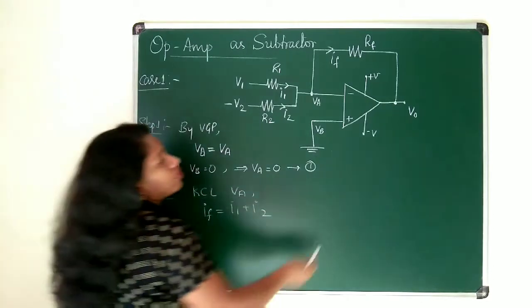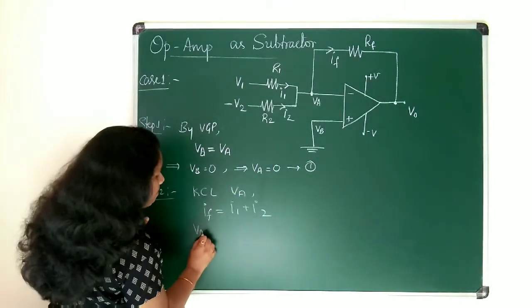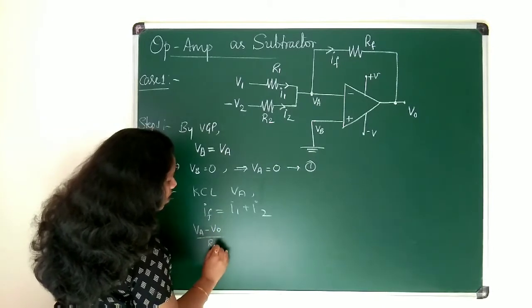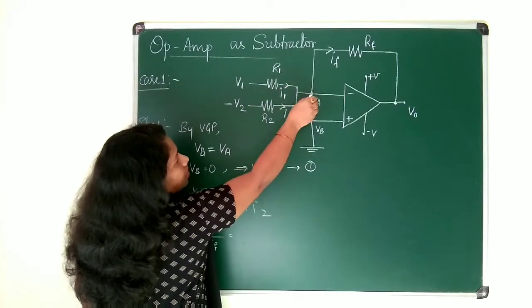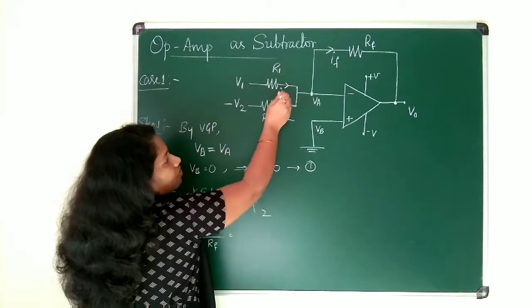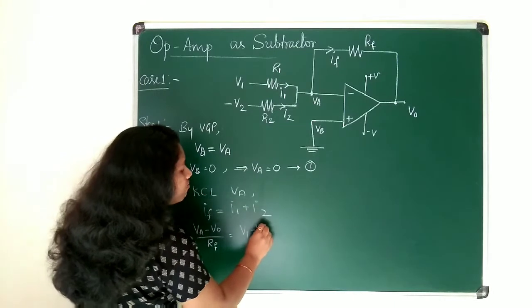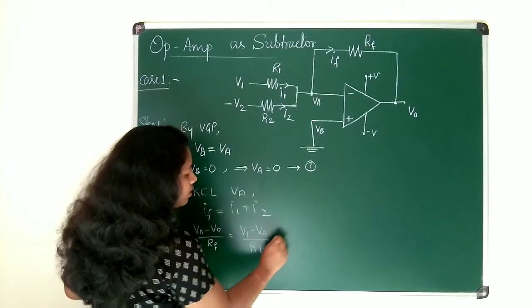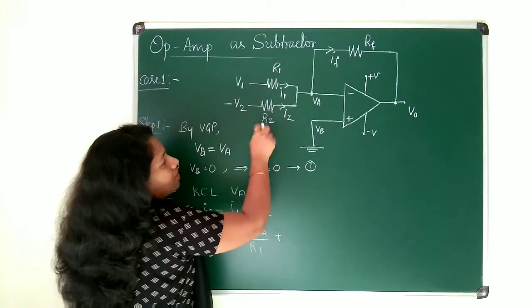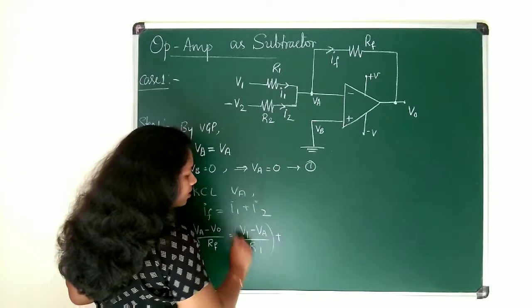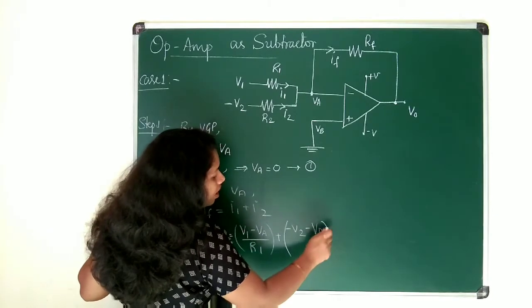What is IF? You know that VA minus V0 divided by RF. VA minus V0 divided by RF is equal to, what is I1? The potential difference between the two terminals of this resistor divided by the resistance value which will be giving you the current. So now I1 is nothing but V1 minus VA divided by R1 plus what is I2? V2 minus VA divided by R2. So let me write that here. Minus V2 minus VA divided by R2.